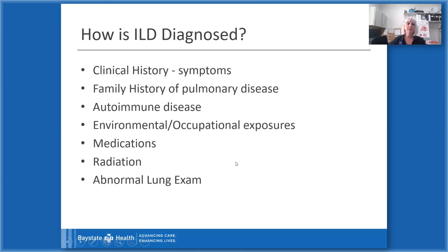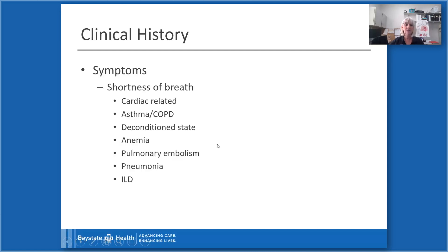How is interstitial lung disease diagnosed? We look at several categories: clinical history focusing on symptoms, family history of pulmonary disease, any connection with autoimmune diseases, environmental or occupational exposures, medication side effects, radiation side effects, and abnormal lung exam. We'll talk about each category individually.